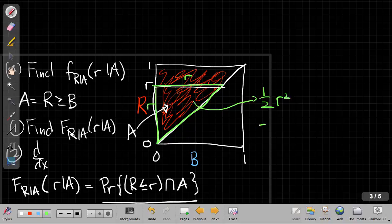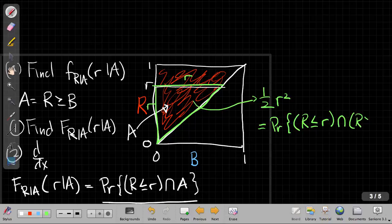So that's the probability of the intersection of those two events, that the random variable R is less than or equal the argument little r, and at the same time that R is greater than or equal to B.